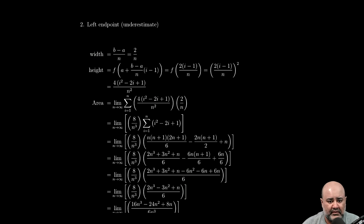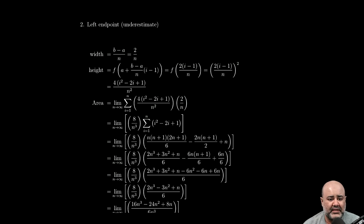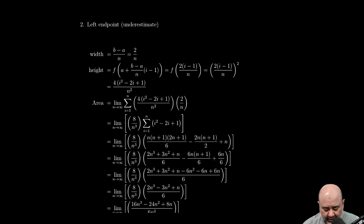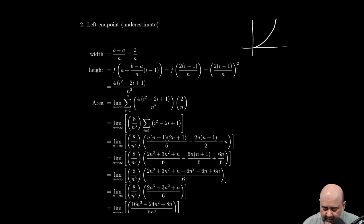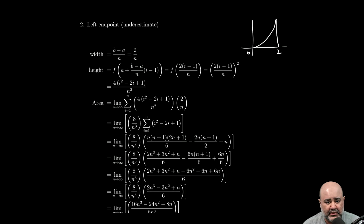All right, we're back with an underestimate or a lower sum. In this case, it's given by using left endpoints. So again, to reorient ourselves, y equals x squared. We're looking for the area bounded by the curve, the x-axis, and x equals 0 and x equals 2 as the endpoints.